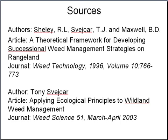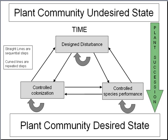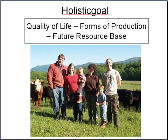The general model for successional management is presented here. This model is defined by three primary categories: design disturbance, controlled species performance, and controlled colonization. As we can see in this schematic, the goal is to move the plant community from an undesired state to a desired state. This is a good opportunity to review the future resource-based description in your holistic goal — does it describe plant communities at the level of detail you require to plan effectively? If not, you may want to modify your holistic goal to provide the specificity you need.